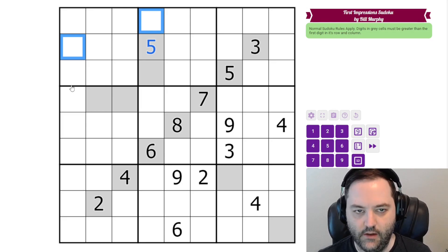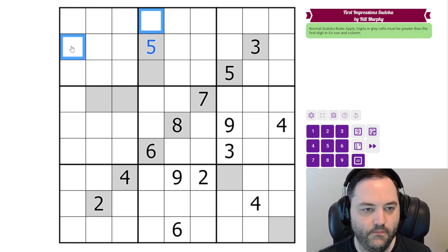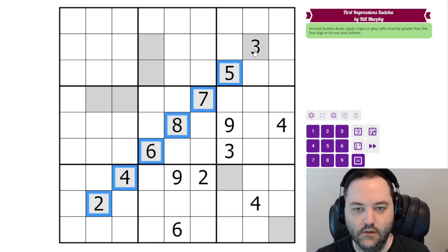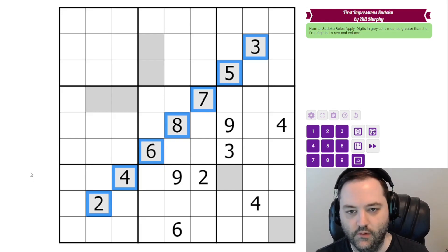They have to be less than the 5, so they are 1. They can't be bigger than the 5. So that's all there is to it. Bill has kindly provided some givens in some of the gray cells, so that is a good place to start with a puzzle like this.